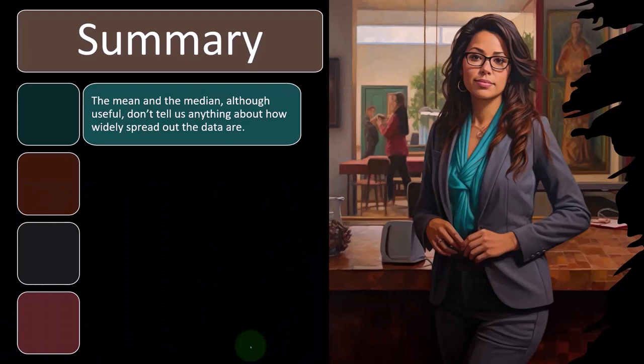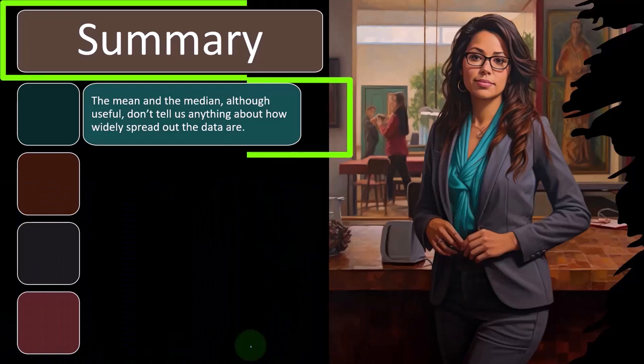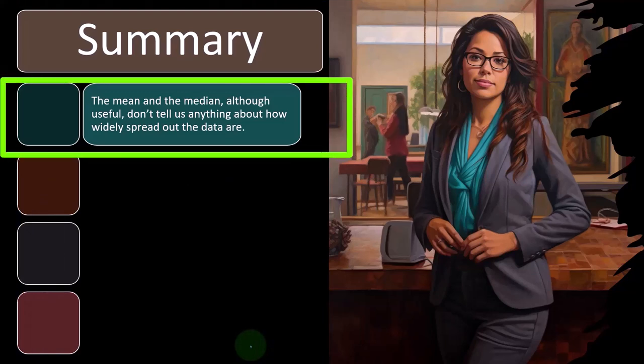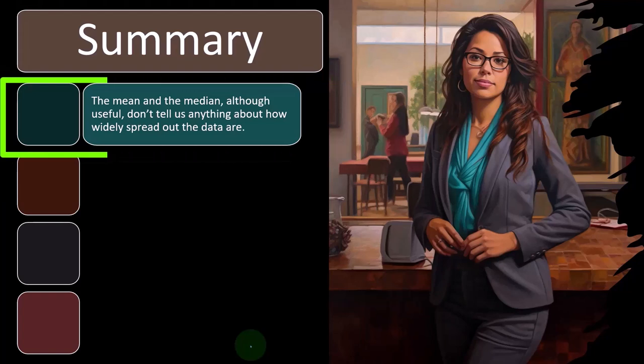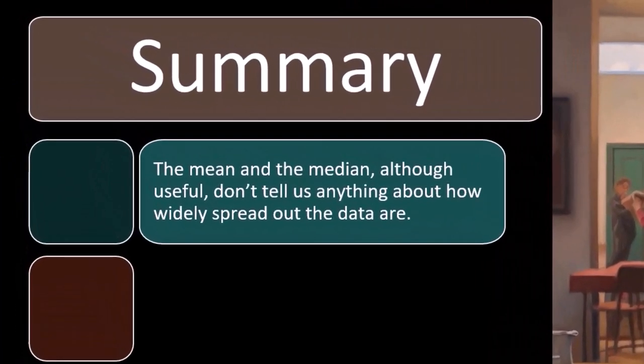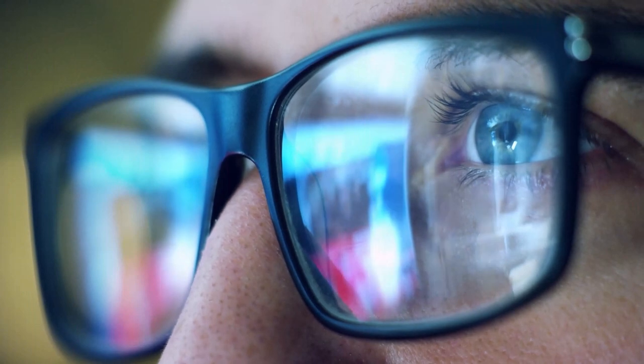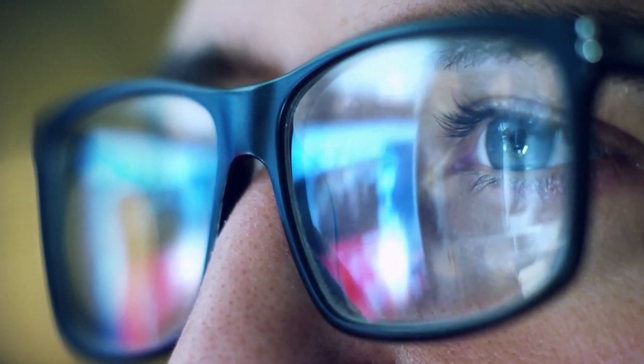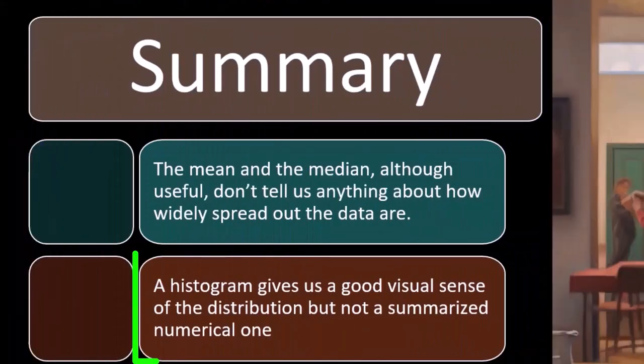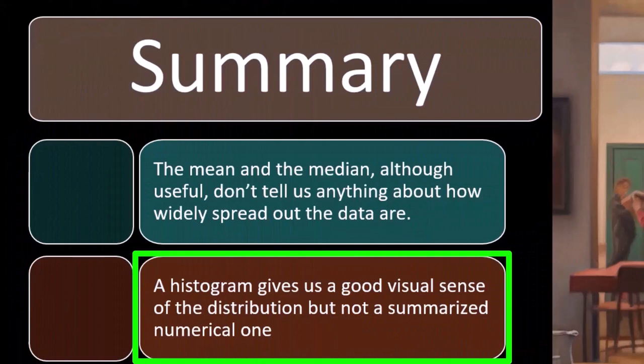So summary, the mean and the median, although useful, don't tell us anything about how widely spread the data are. So remember that most of the time, those first central tendency numbers are the ones we look at, the median and the mean. But we also, it's going to be quite useful to know the spread of the data, which we can visualize with a histogram, but also would like more of a numerical representation. A histogram gives a good visual sense of the distribution, but not a summarized numerical one.